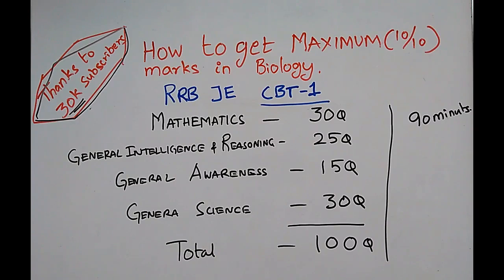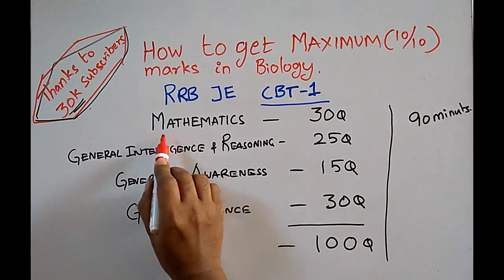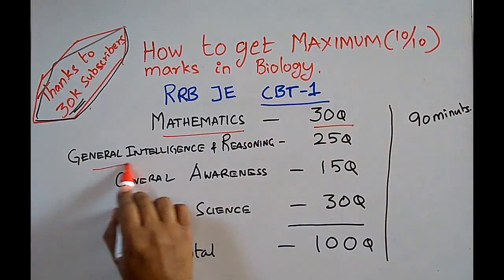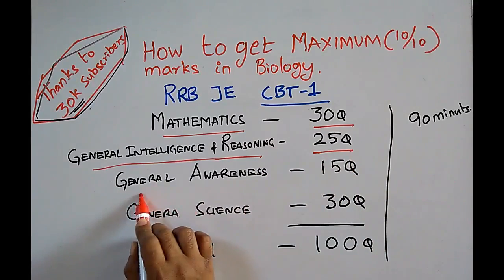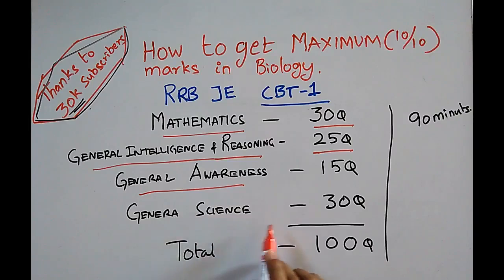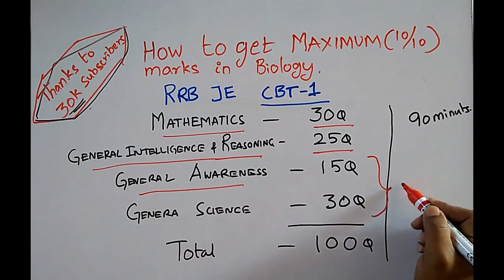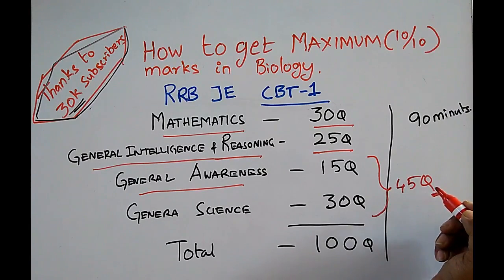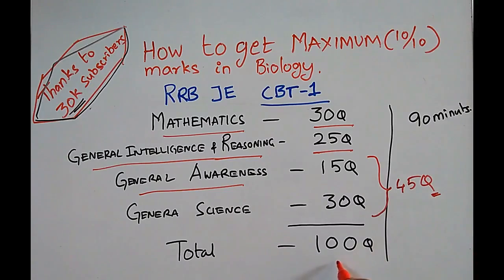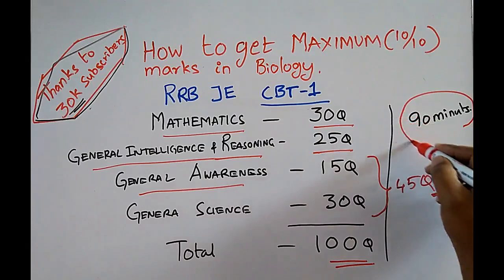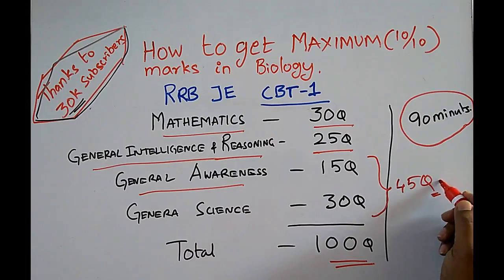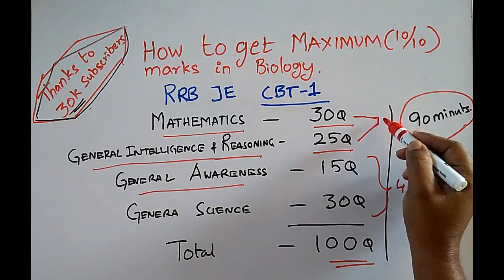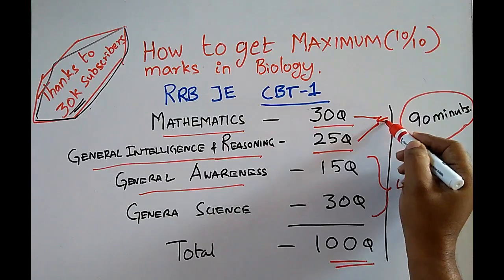If we come to RRB JE question paper pattern, we get mathematics 30 questions, general intelligence and reasoning 25 questions, general awareness 15 questions, and general science 30 questions. These form 45 questions which take less time to solve. If you know the answer, mark it; if you don't know, just skip it. You have to solve 100 questions within 90 minutes. These 45 questions you have to solve within 30 minutes. The remaining 60 minutes you can use for mathematics and reasoning.